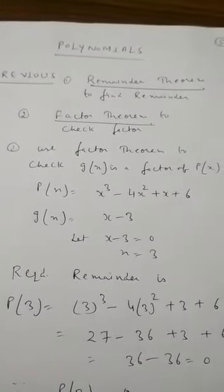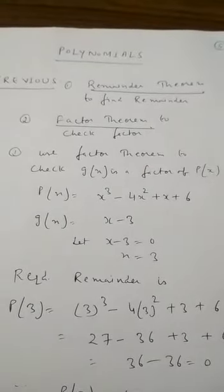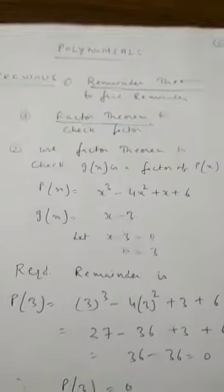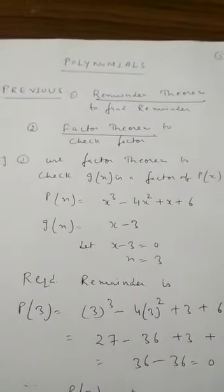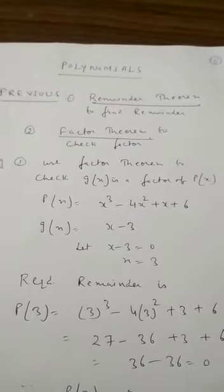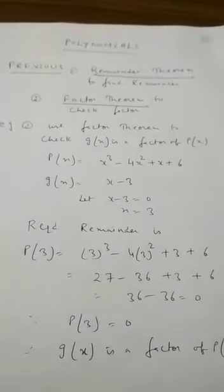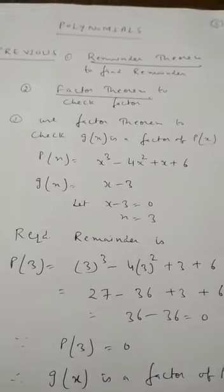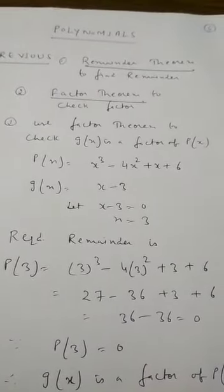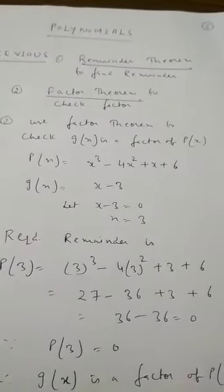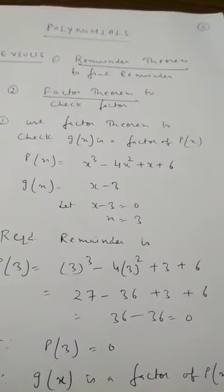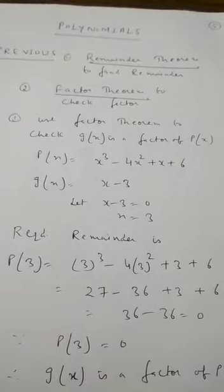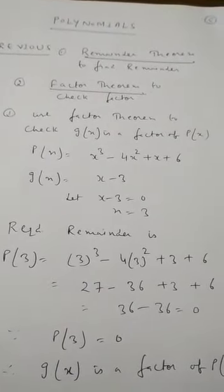Let's take the first example. You will check whether g(x) is a factor of p(x). Now p(x) is given as x³ - 4x² + x + 6, and g(x) is x - 3. Let x - 3 = 0, so x = 3. By the remainder theorem, we obtain the remainder by replacing x with 3: p(3) = 3³ - 4(3²) + 3 + 6 = 27 - 36 + 3 + 6 = 0. Since the remainder is 0, therefore g(x) is a factor of p(x).